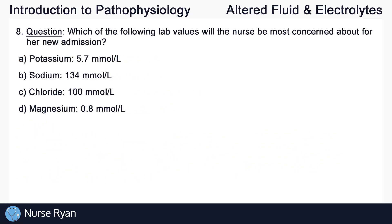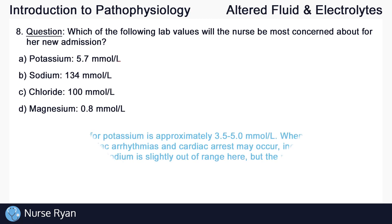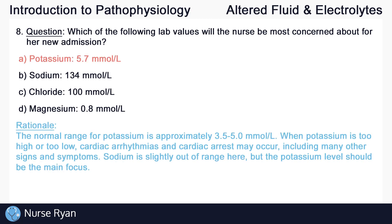Moving on to question number eight. Which of the following lab values will the nurse be most concerned about for her new admission? The answer is A, potassium at a level of 5.7 millimoles per liter. The normal range for potassium is approximately 3.5 to 5. When potassium is too high or too low, cardiac arrhythmias and cardiac arrest may occur, including many other signs and symptoms. Sodium is slightly out of range here, but the potassium level should be the main focus.